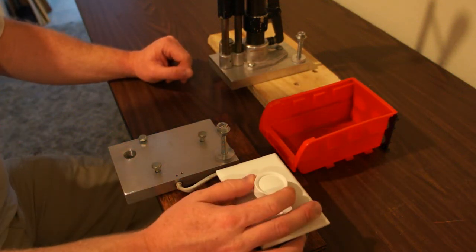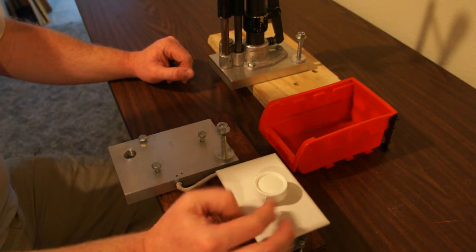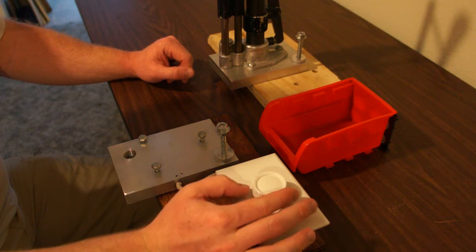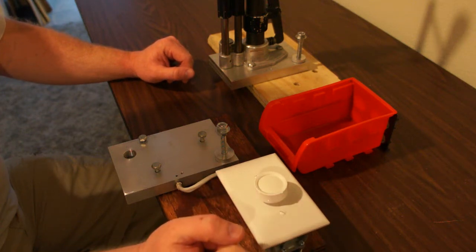This is a light dimmer switch. Turn it all the way this way, it's about off, not very much power. Turn it all the way up and get full power.